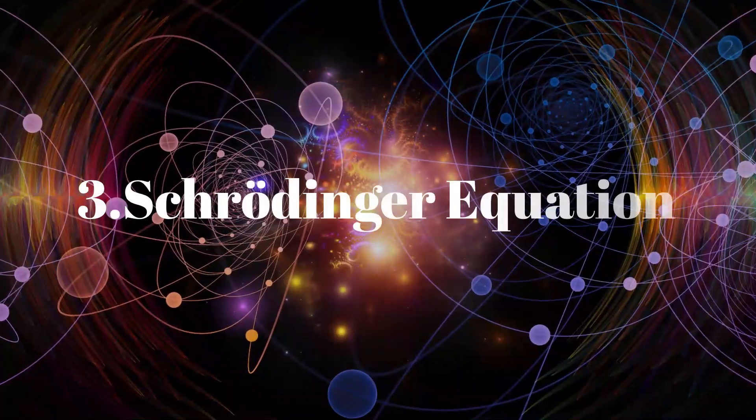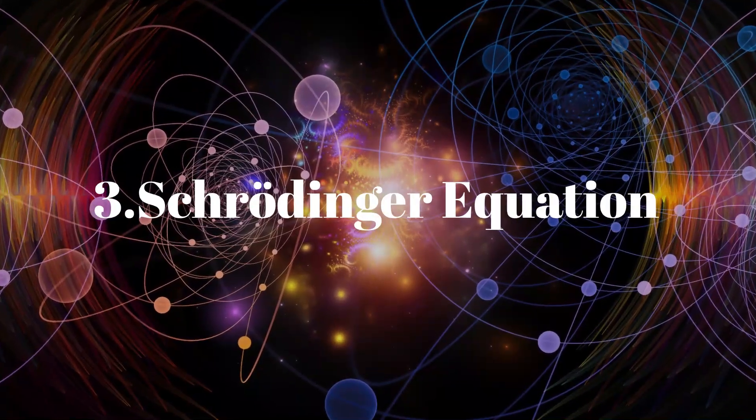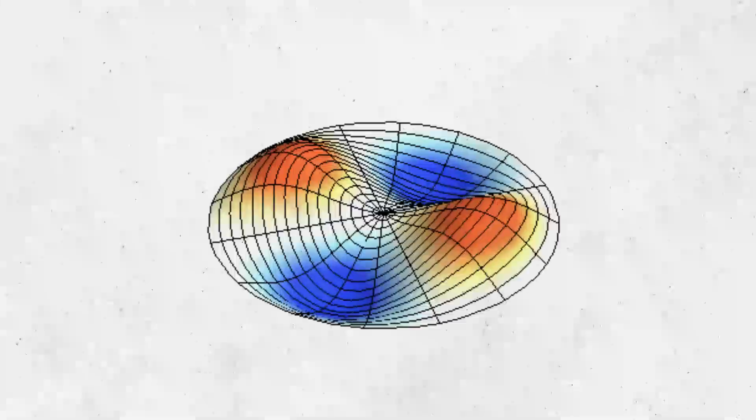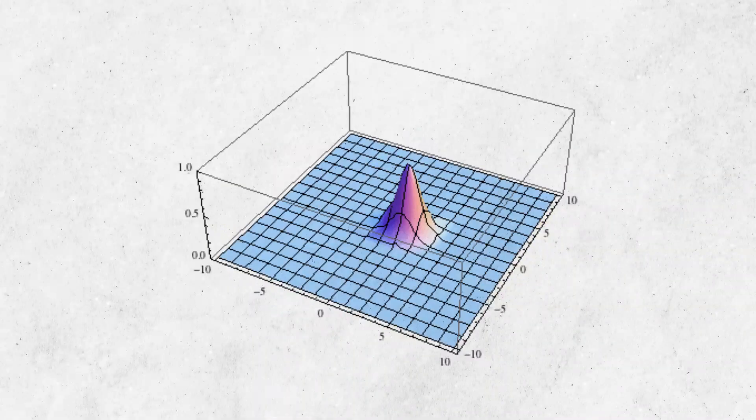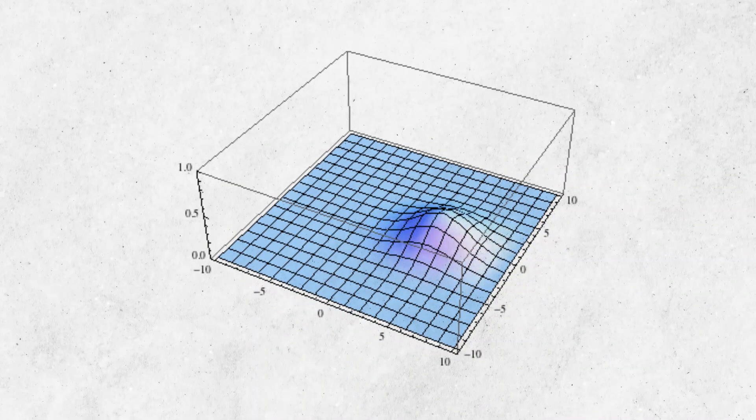In quantum mechanics, the Schrödinger equation is used to describe the behavior of quantum systems. It is a wave equation that describes how quantum systems evolve over time.